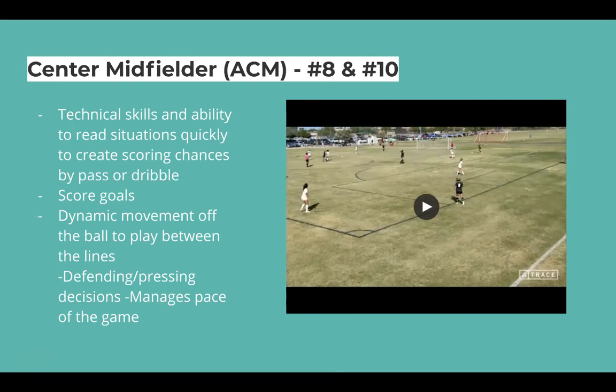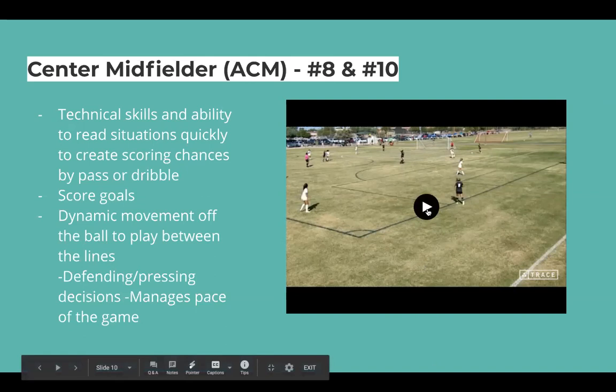Make no mistake about it — when you're in that role, you're in the opposition's scouting report. The other team is looking for you and knows they're not going to let you direct the game. So you have to figure out how to do that. We do that with dynamic movement off the ball. Find moments where you've made an intelligent run to get in between the lines so your number six can find you, and then you're off into the other team's back four.